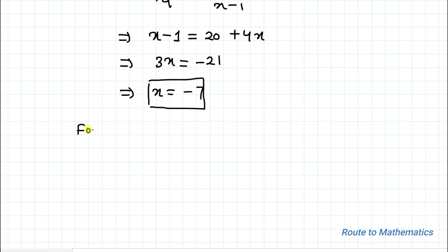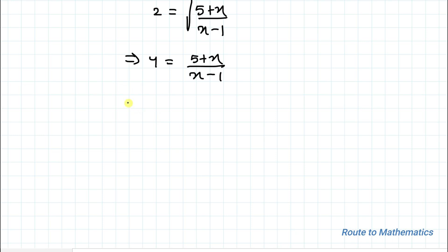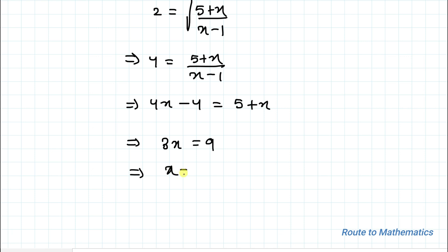Now finding the value of x for y equals to 2: 2 equals to root under (5 plus x) divided by (x minus 1). Squaring both sides, 4 equals to (5 plus x) divided by (x minus 1). By cross multiplication, 4x minus 4 equals to 5 plus x, which gives 3x equals to 9, so x equals to 3.